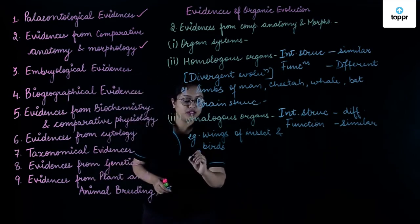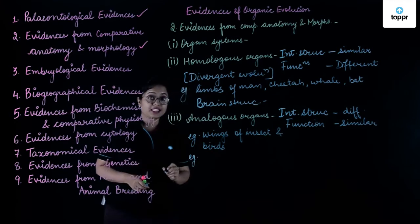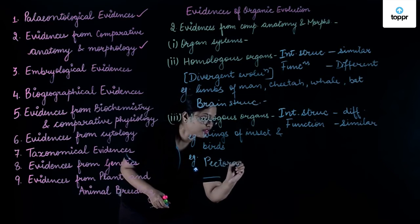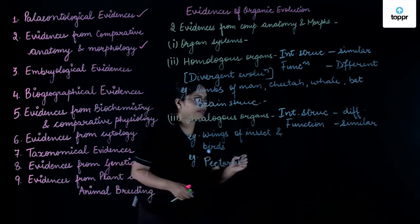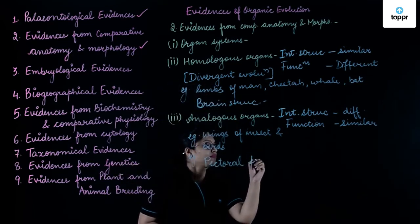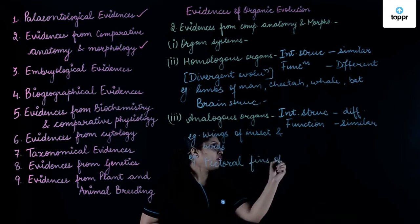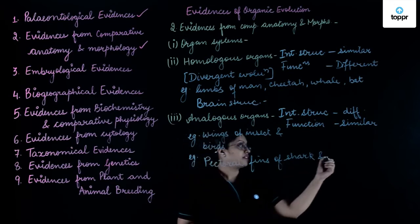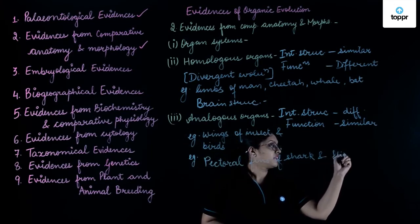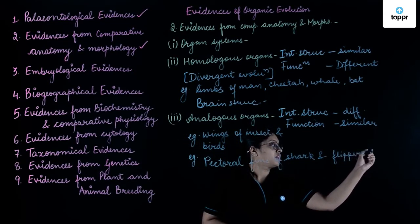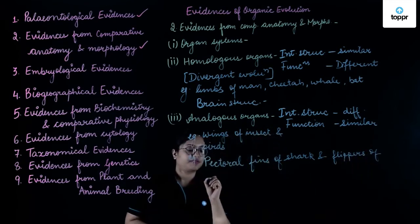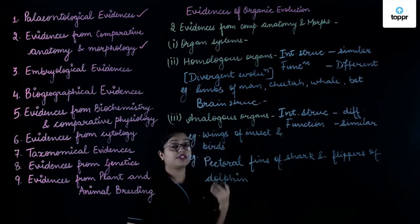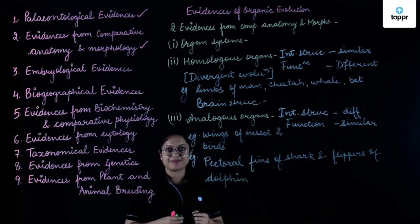The next example we can see is of pectoral fins of shark and flippers of dolphins — they are both again different in their internal structure.